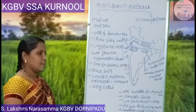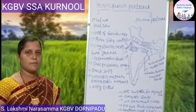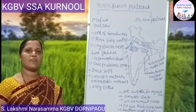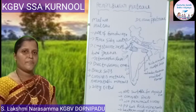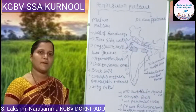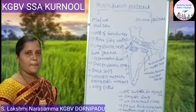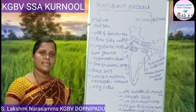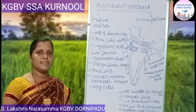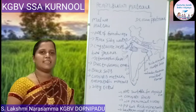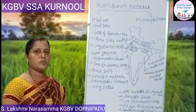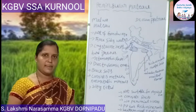Let us see the next lesson. Before going to today's lesson, I will ask some questions. What is the name of our last class lesson? Very good — 'Really India? Really Features.' How many parallel ranges are in the Himalayas? Very nice — three parallel ranges: one is Himadri or Greater Himalayas, second is Himachal or Lesser Himalayas, and third is Shivaliks. How many relief divisions are in our country? Very good — six divisions. We already know the Himalayas and Indo-Gangetic Plains.